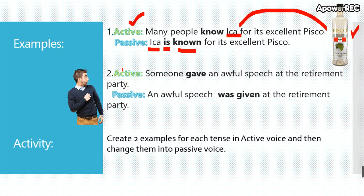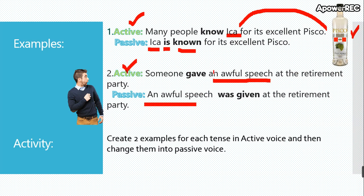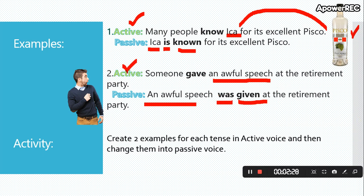Number two — active voice. Someone — notice this is simple past — someone gave an awful speech at the retirement party. Passive voice: an awful speech. 'Gave' — this is simple past, but it has the participle form, so this is 'given'. This is simple past, so I use the auxiliary: 'was given'. At the retirement party.